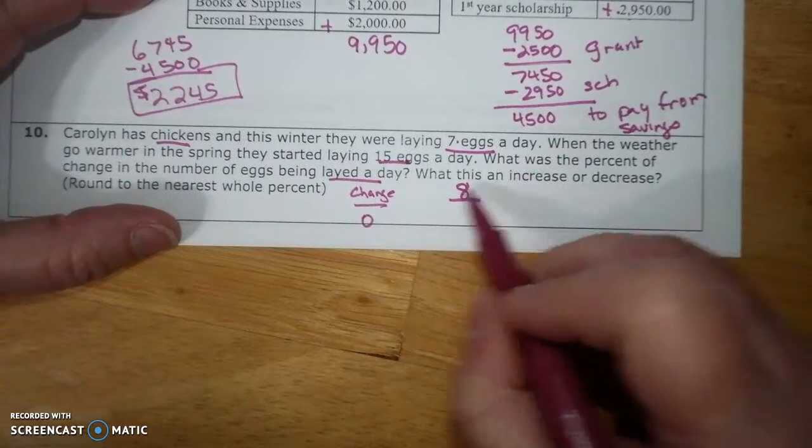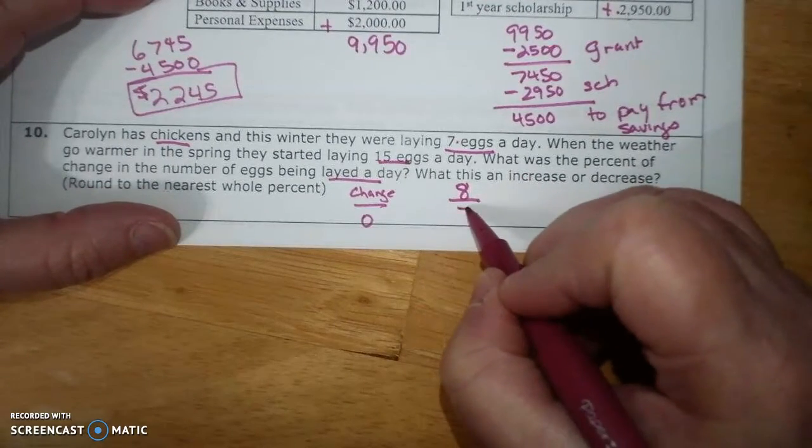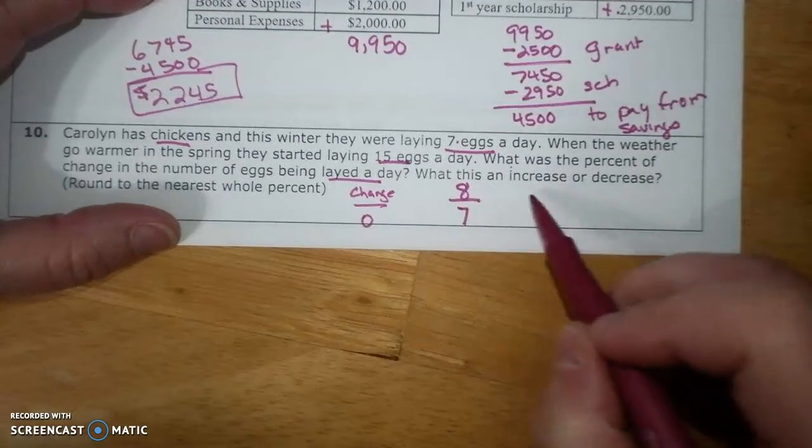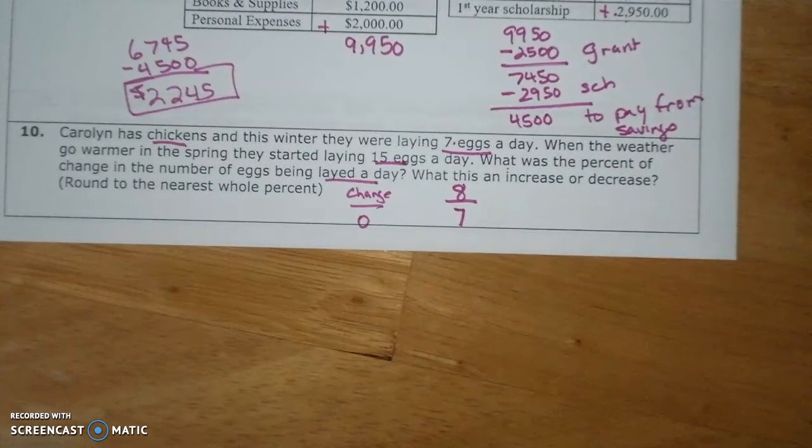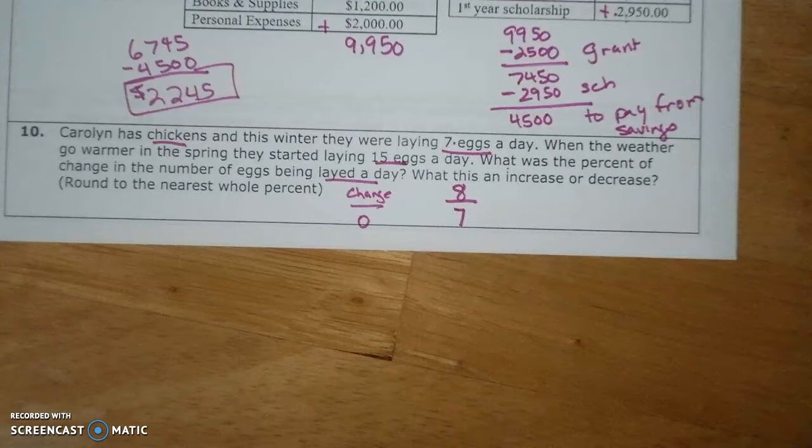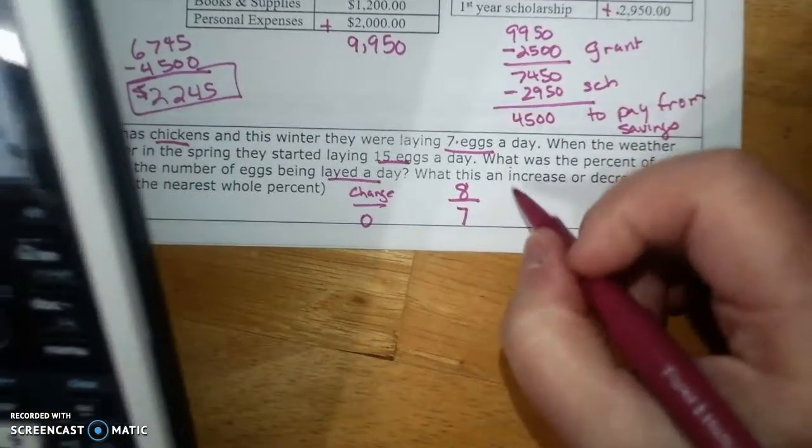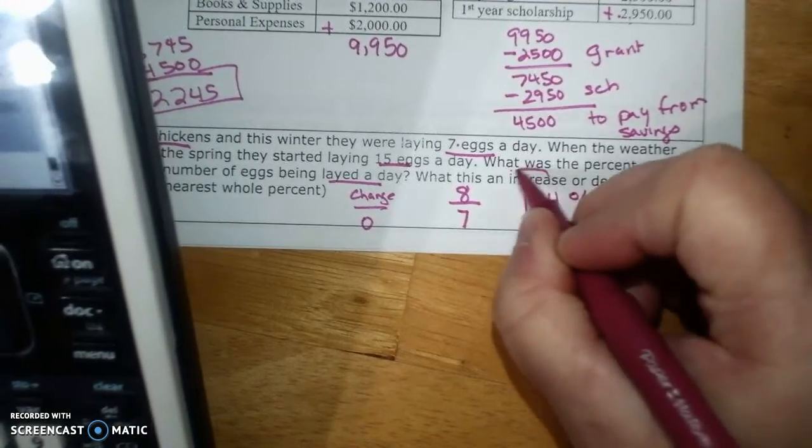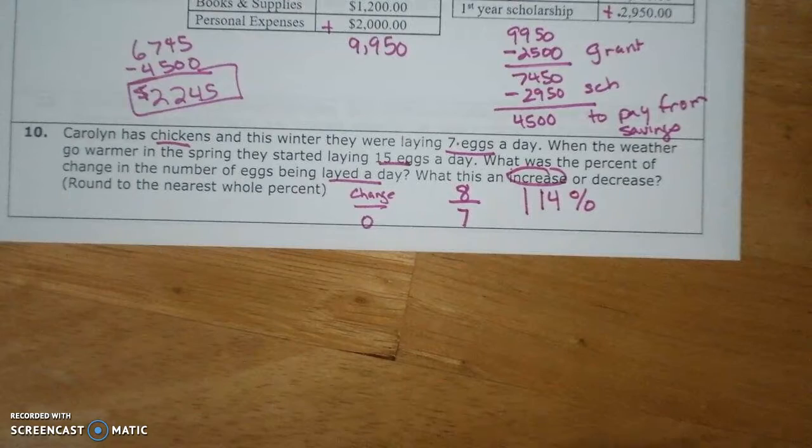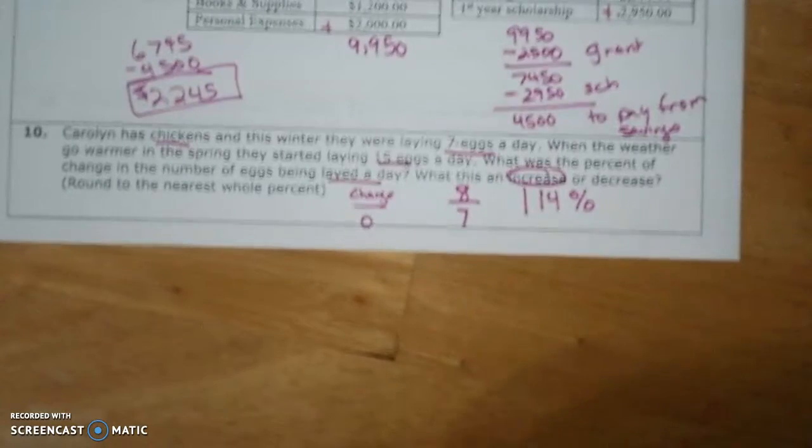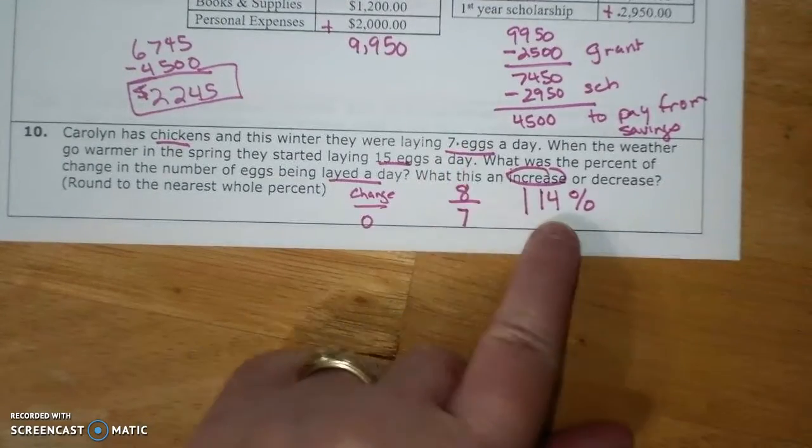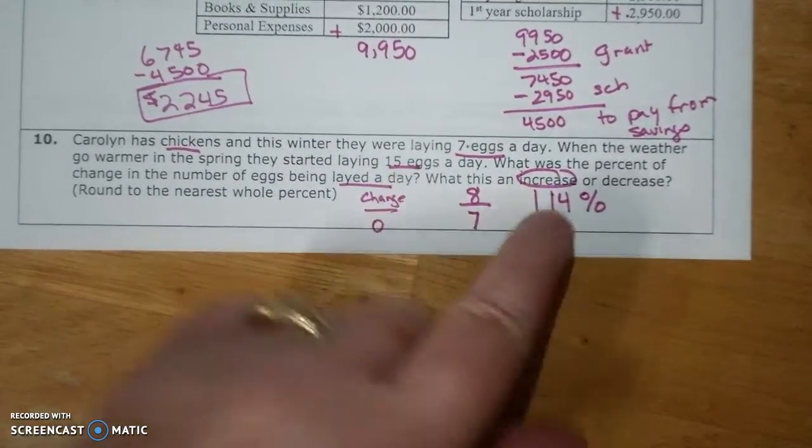And what was the percent? The original was 7. What was the percent? 8 divided by 7 is 114% increase. So 7, double it, that's 100%, and then a little bit more.